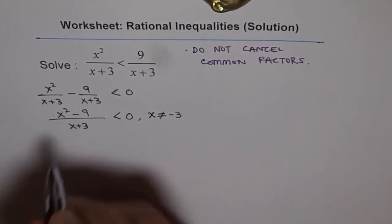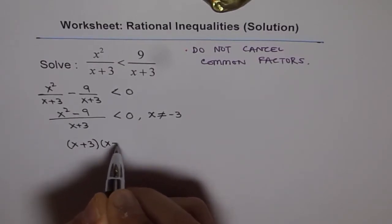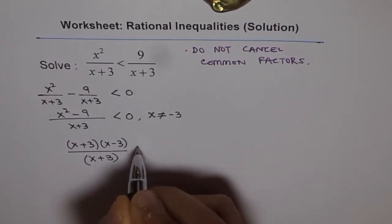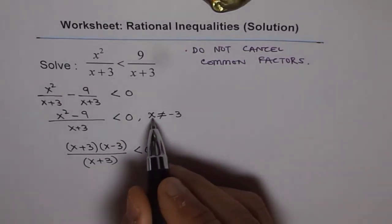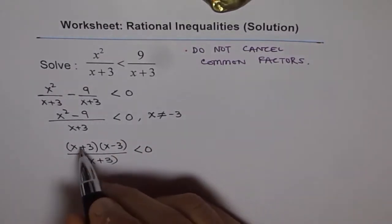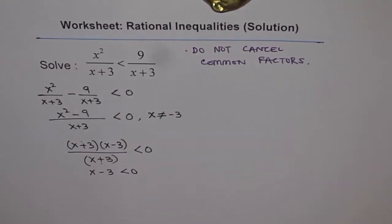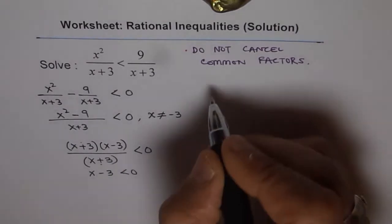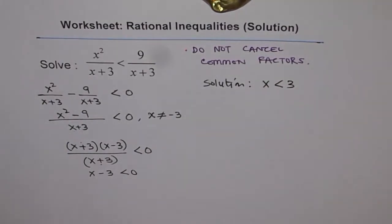We have two factors in the numerator: x plus 3 and x minus 3, and in the denominator we have x plus 3. Since we have already written that x is not equal to minus 3, we can cancel those common factors, giving us x minus 3 is less than 0, and therefore the solution is x is less than 3.